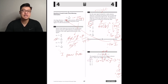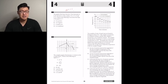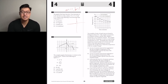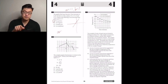A graph of linear function f has intercepts at (a, 0) and (0, b). If a plus b equals 0 and a doesn't equal b, which is true about the slope? Plugging in a = -1 and b = 1: the points are (-1, 0) and (0, 1), which gives a positive slope. A.